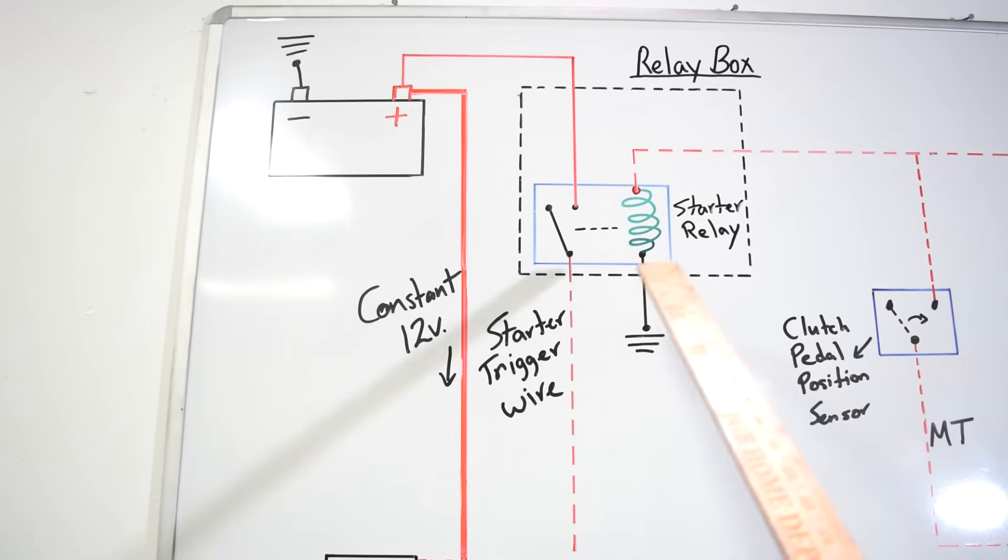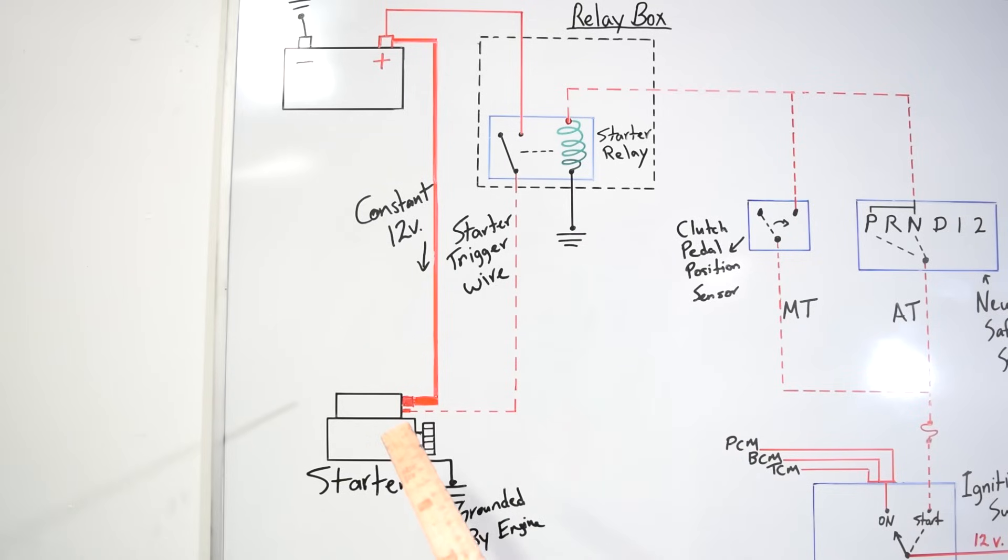Once this is activated the coil for the control side will pull on the switch side, and since this is normally open it will close this, allowing for current to flow from your battery through this starter trigger wire through your starter relay down to your starter. And since your starter receives constant voltage from your battery at all times and is grounded through your engine, it starts spinning, spinning your flywheel which in turn turns your crankshaft, turns your engine over, produces the crank signal, and since these control modules are already powered your car starts and gets going.